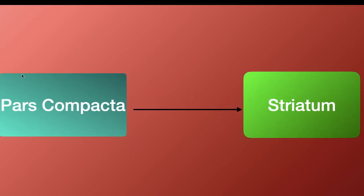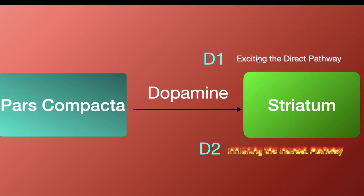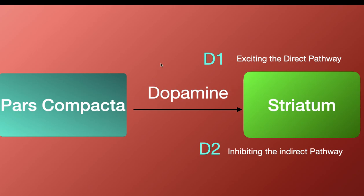The nigrostriatal pathway is the connection between the pars compacta and the striatum. The pars compacta sends a signal using dopamine as the neurotransmitter, and dopamine attaches to two receptors: D1 and D2. When dopamine attaches to D1, it excites the direct pathway. When dopamine attaches to D2, it inhibits the indirect pathway. These happen simultaneously — exciting the direct pathway while inhibiting the indirect pathway. During Parkinson's disease, this connection can get damaged, which affects motor control.